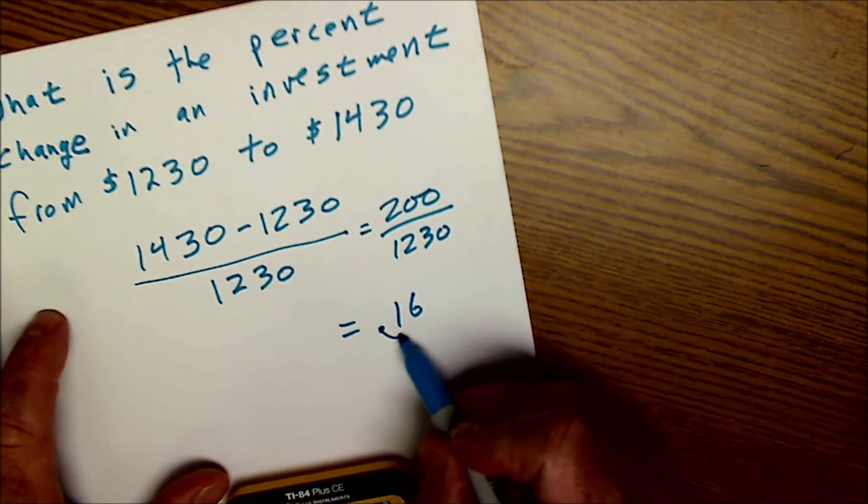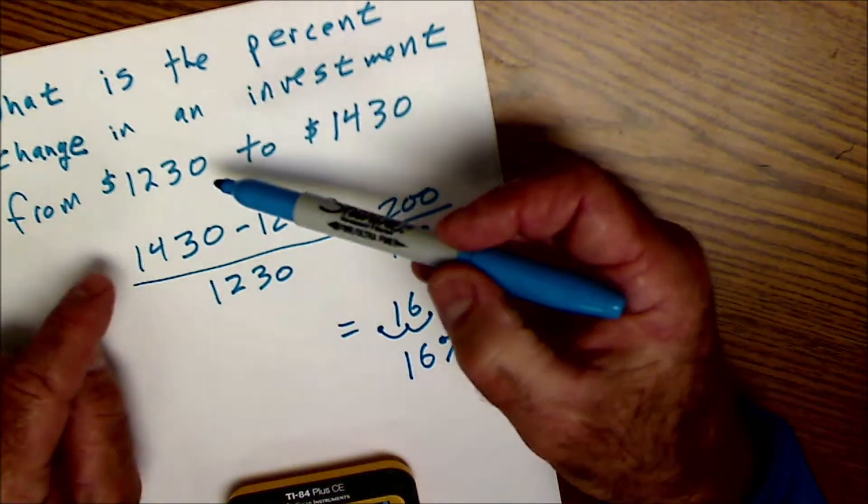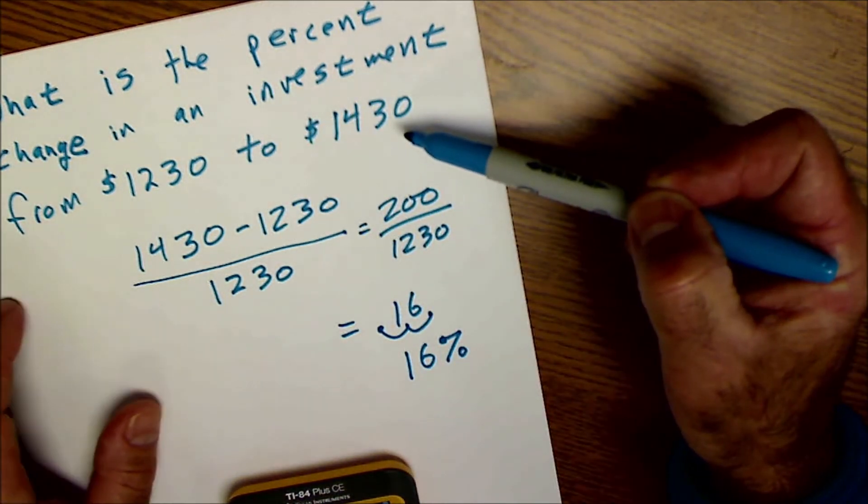Convert that to a percent, 1, 2. So 16% increase from $1,230 to $1,430.